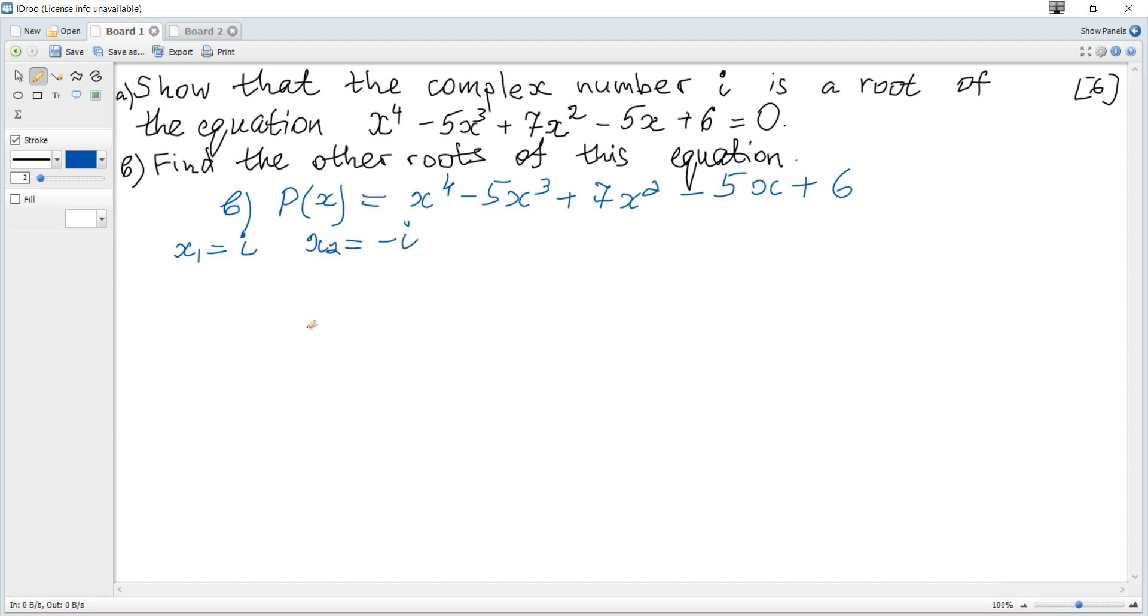Let's apply the remainder theorem. If we know two roots, the given polynomial can be represented as (x - i)(x + i) multiplied by another polynomial function Q(x). Since the initial polynomial is of degree 4 and we have degree 2 here, Q must be a polynomial of degree 2.